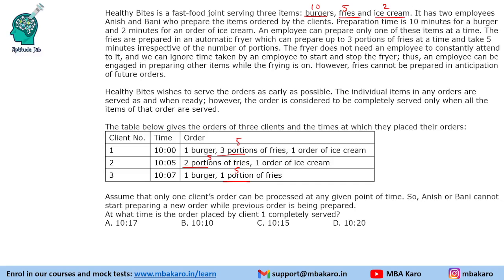The fryer does not need any employee to constantly attend to it, so employee time will not be counted for fries — that is machine time. We can also ignore the time taken by an employee to start and stop the fryer. Thus an employee can be engaged in preparing other items. We only count employee time for the other two activities; the machine handles fries automatically.